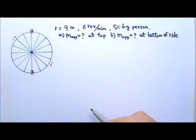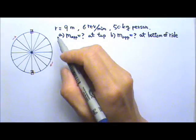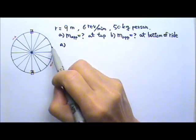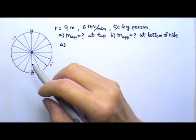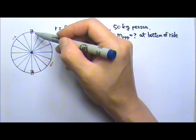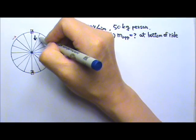Let's follow the procedures again. At the top, since the person is doing circular motion, he has the centripetal acceleration going towards the center and the center is down here. So the acceleration goes downward.